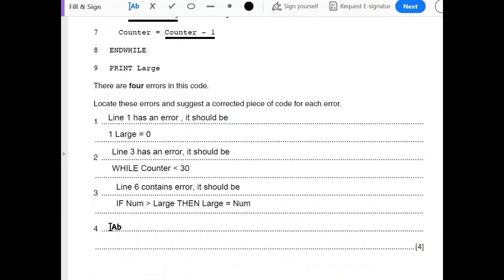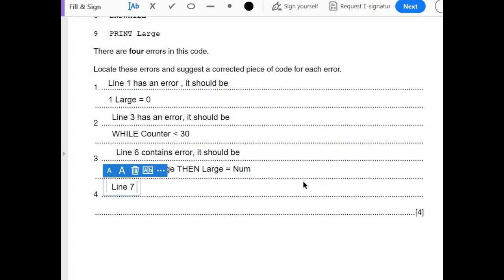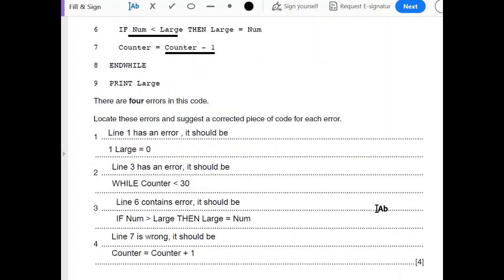So this has to be our final error, that is line number 7. What it should be? It should be counter equals counter plus 1. And there you go, you have found your four errors, you have suggested the corrections, and you have scored yourself a perfect four marks.